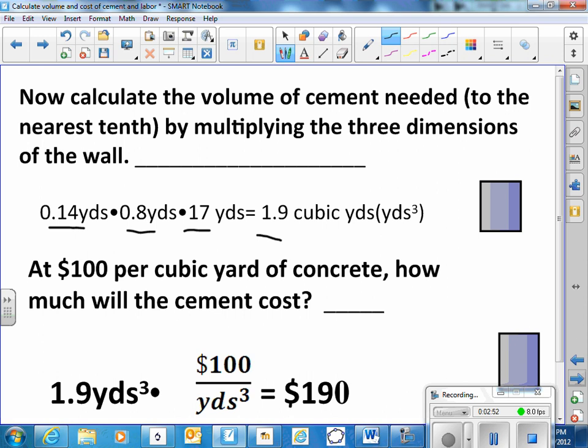And then if it costs a hundred dollars for every cubic yard, then I multiply 1.9 cubic yards times a hundred dollars per cubic yard. The units cancel. So we just have units of dollars. 1.9 times a hundred is $190.